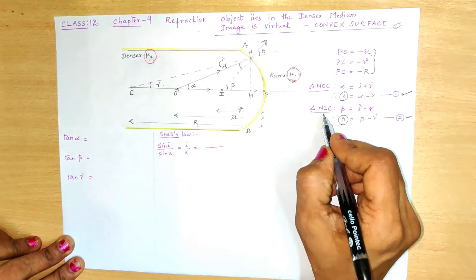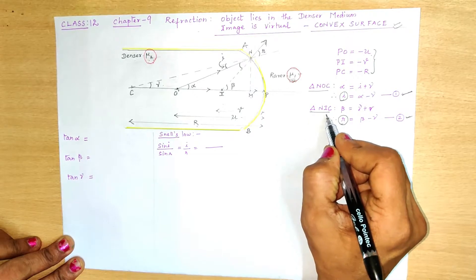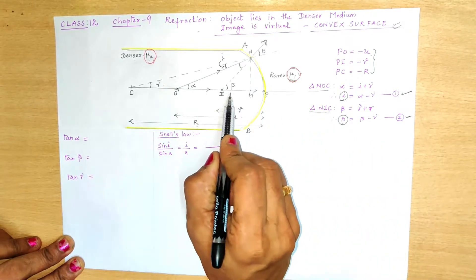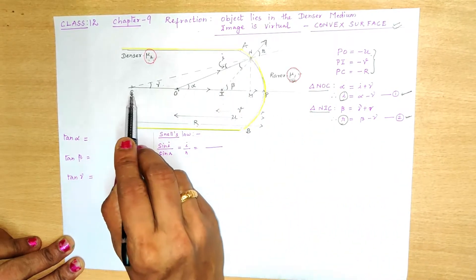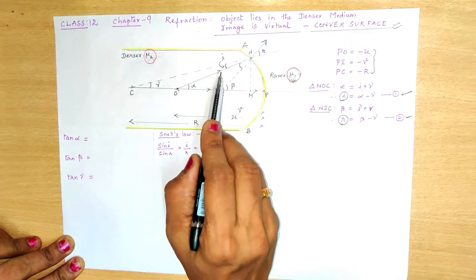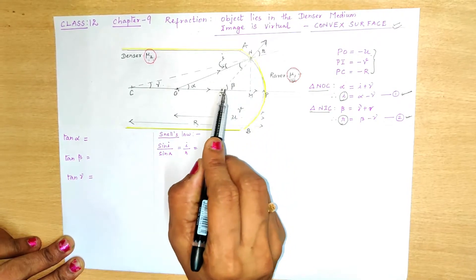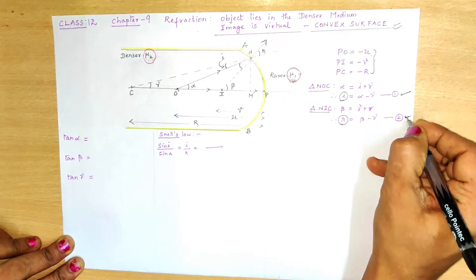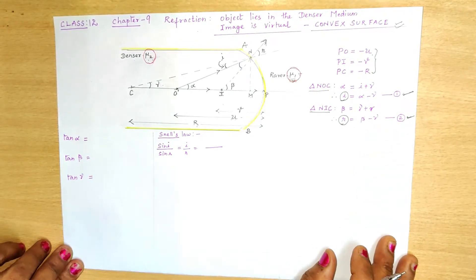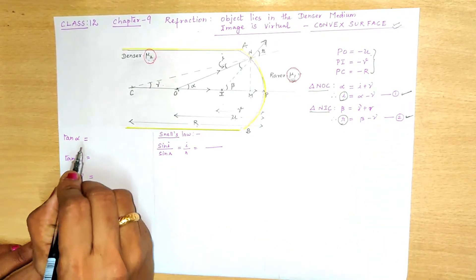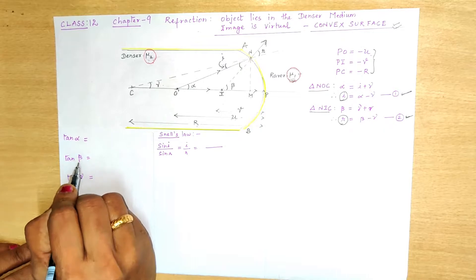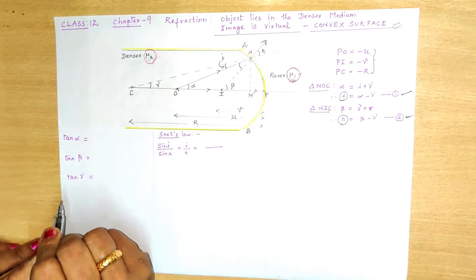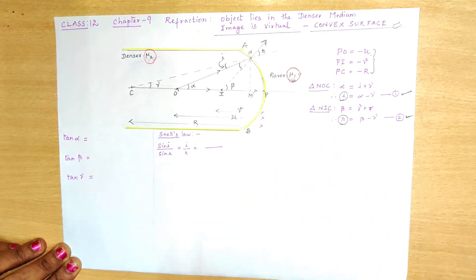Similarly, we consider triangle N, I, C. Therefore, angle R is equal to beta minus gamma. This is equation number 2. We also note that all these angles — alpha, beta, gamma, I and R — are taken as small angles since the rays are paraxial.